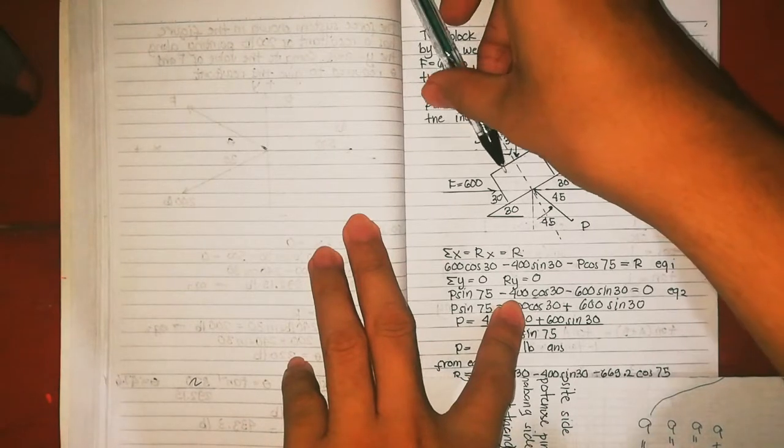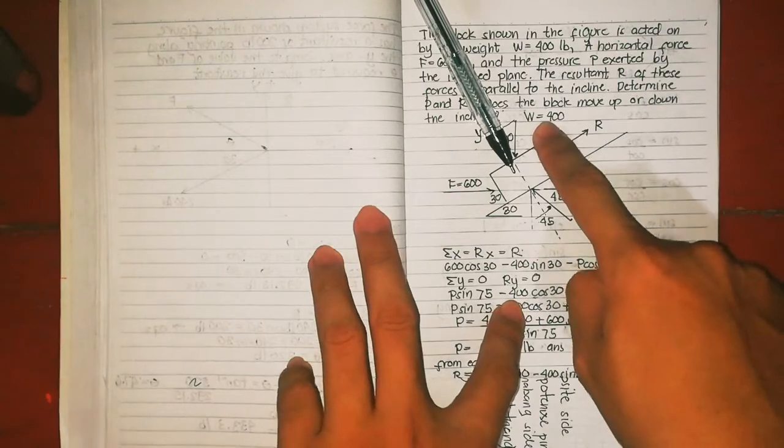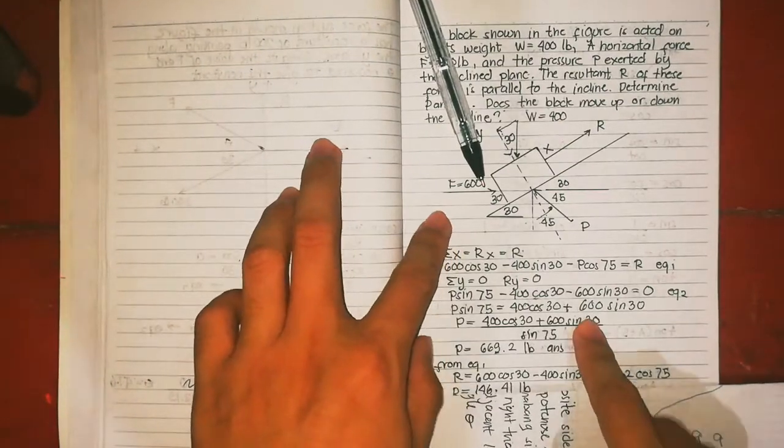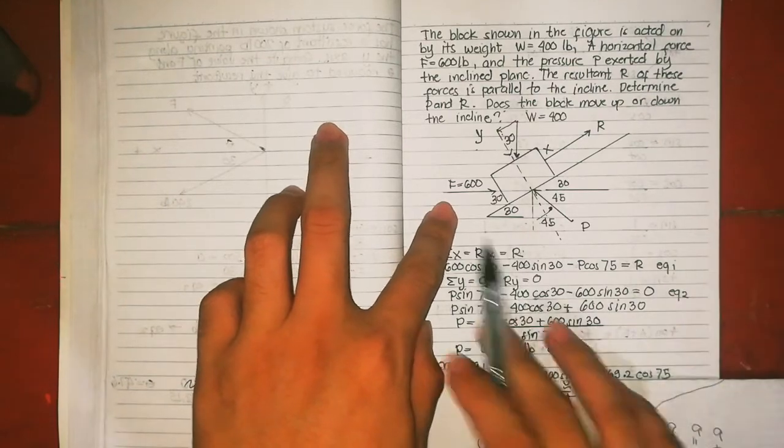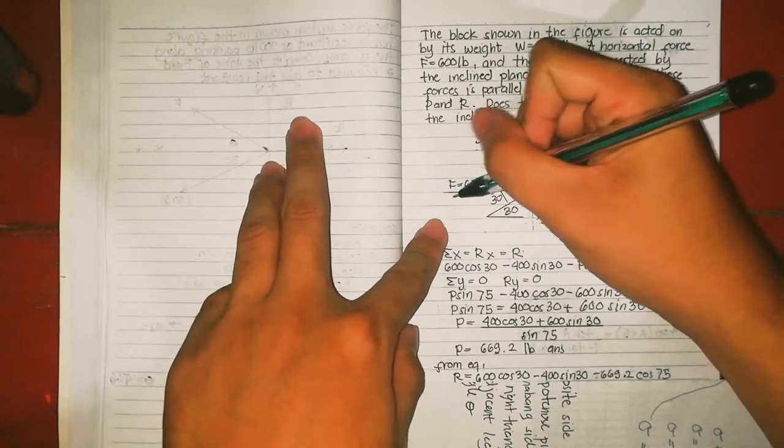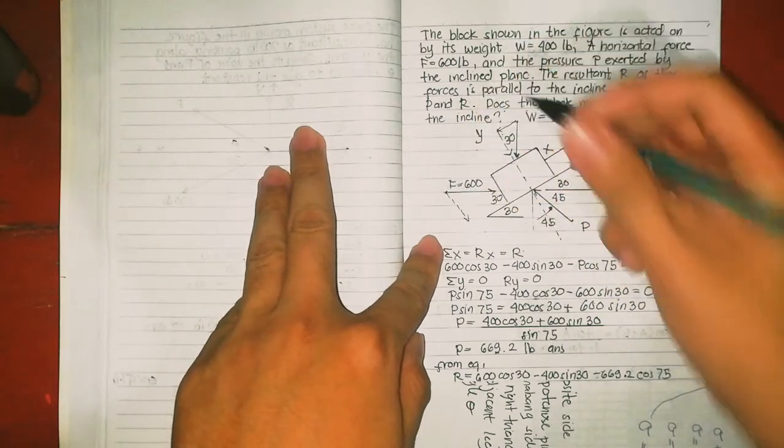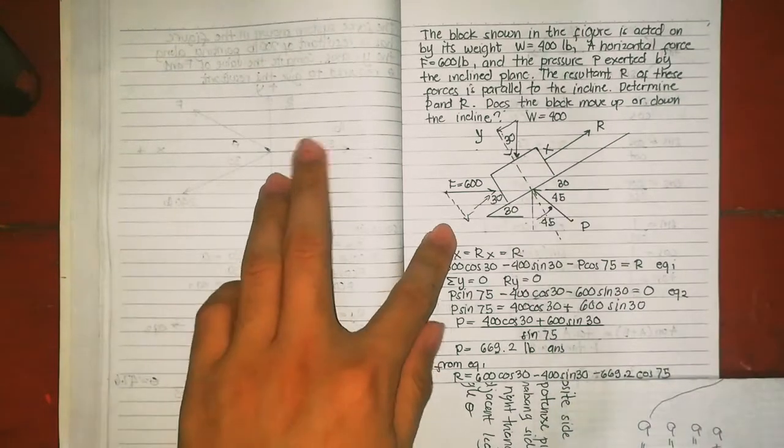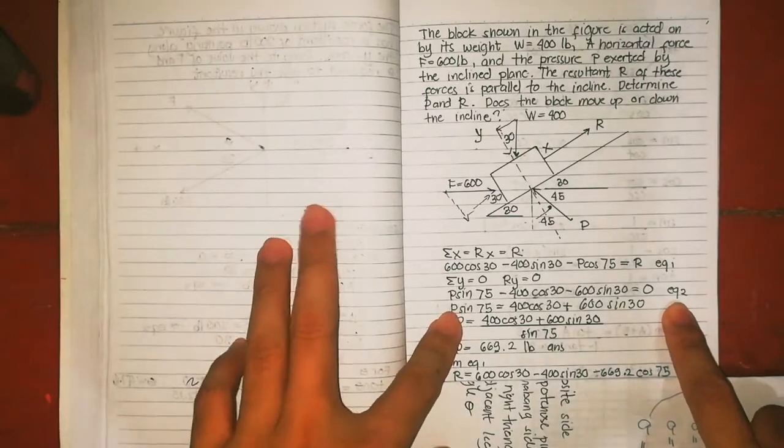Y is the opposite side over hypotenuse, this is sine, so P sine 75. The Y component of P is going upward, so positive. Minus, the weight is 400 cos 30 because it goes down. This is the adjacent and hypotenuse, this is cosine, so negative 400 cos 30. The 600 force, 600 sin 30, because the force Fy component starts from the tail of the resultant, then meets the X component, so negative 600 sin 30 equals 0. That's equation 2.